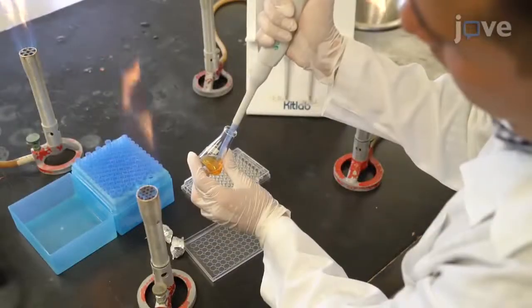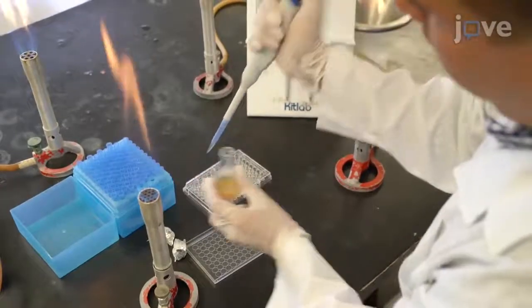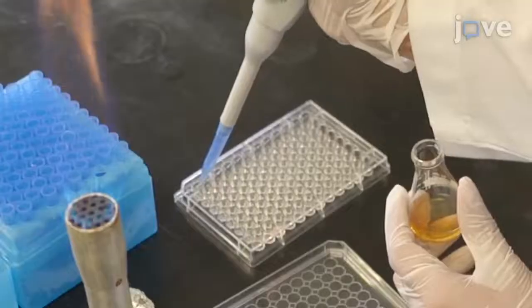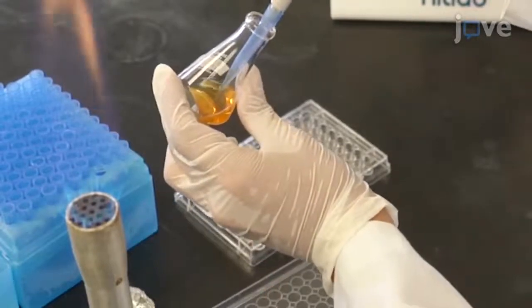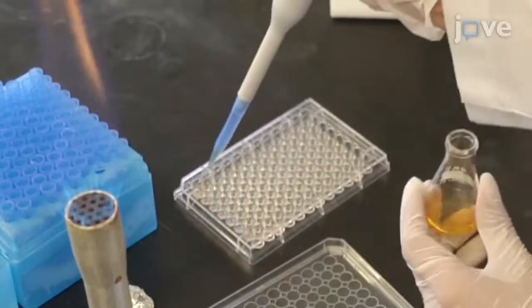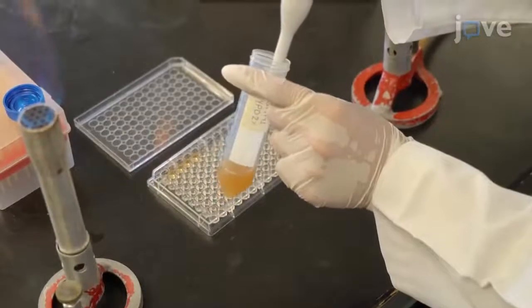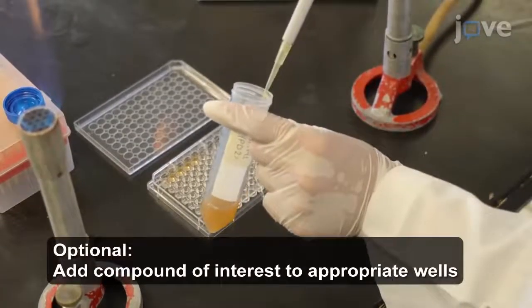For microplate growth curve setup, add 145 microliters of an appropriate experimental culture medium to each well of a sterile 10 by 10 well microplate with a lid, and inoculate each well with 5 microliters of the overnight culture.